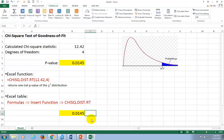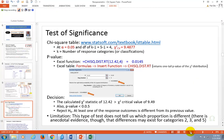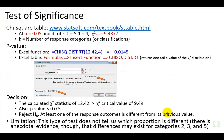That wraps it up. Based on the p-value, which is less than 5%, we reject the null hypothesis and conclude that at least one of the response outcomes is different from its previous value.